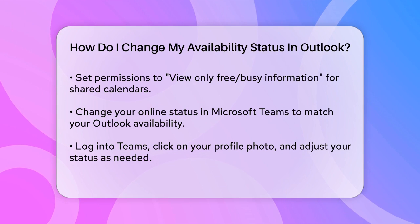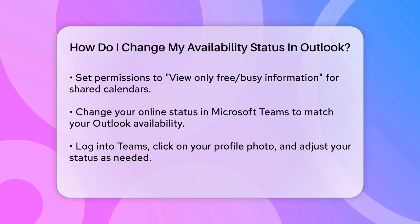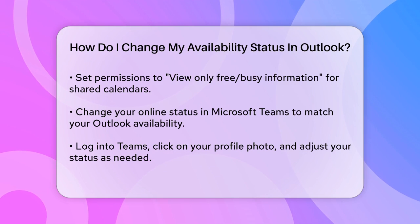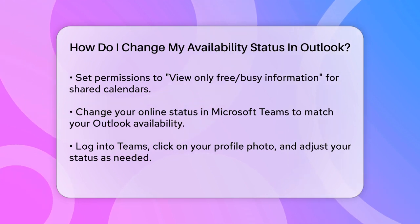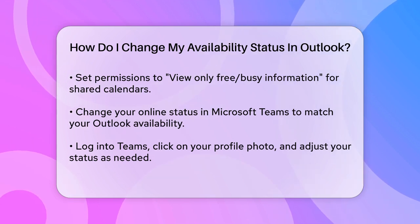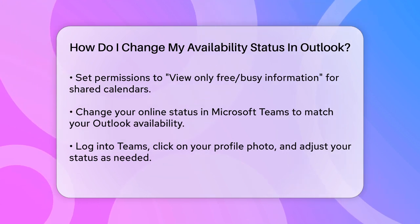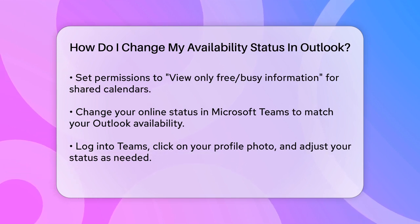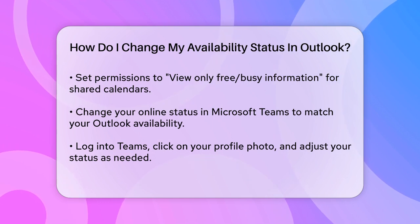If you're using Microsoft Teams along with Outlook, you can also change your online status to reflect your availability. Open the Microsoft Teams app, log in with the same email ID as your Outlook account, and click on your profile photo. From the status bar, you can change your status to Busy or any other status that suits your needs. Make sure to go to settings and select Teams as the chat app for Office to ensure your status changes are reflected in Outlook.